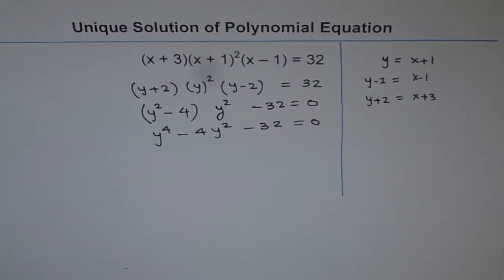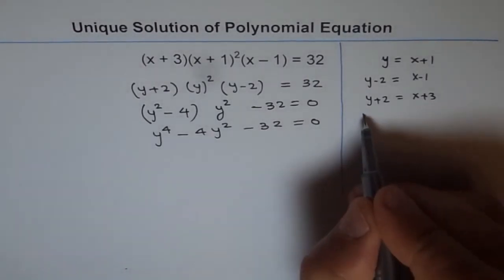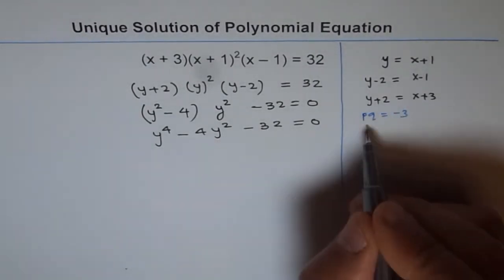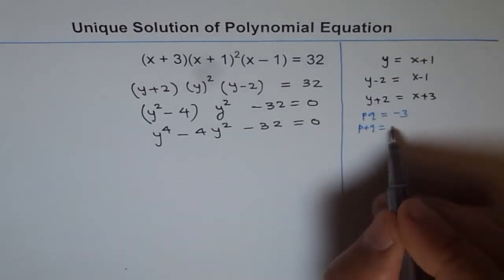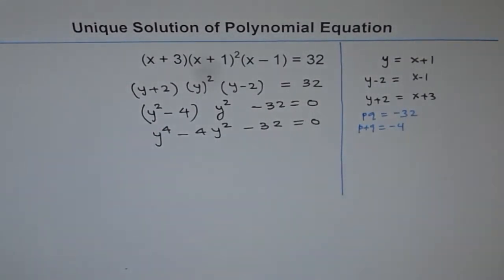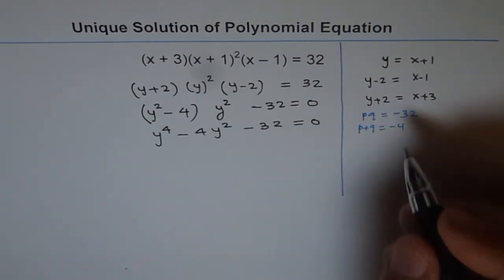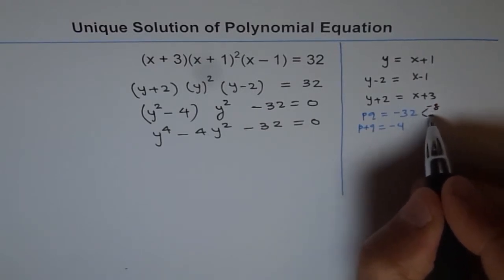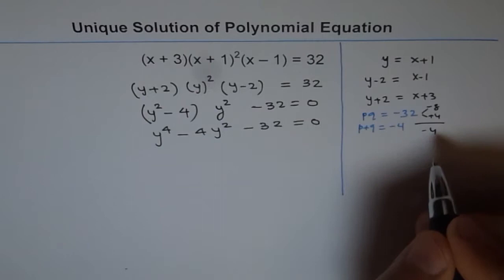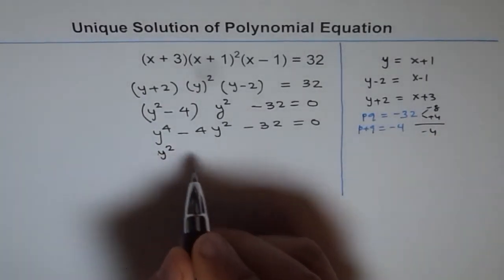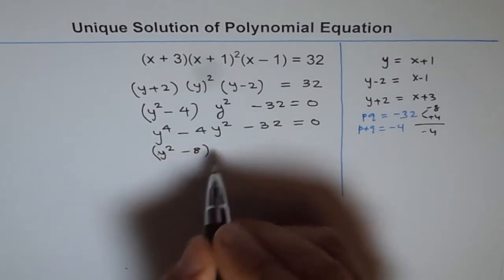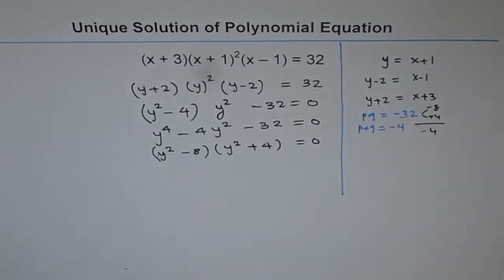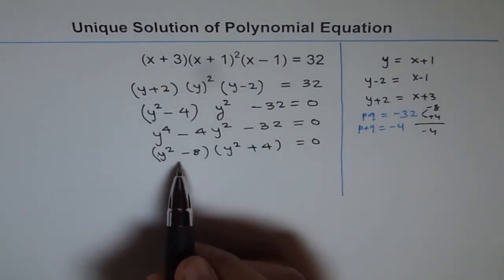Using product and sum: we need two numbers p and q whose product is minus 32 and whose sum is minus 4. Those two numbers are minus 8 and plus 4. If you add them you get minus 4. So we can factor this as (y squared minus 8) times (y squared plus 4) equals 0.